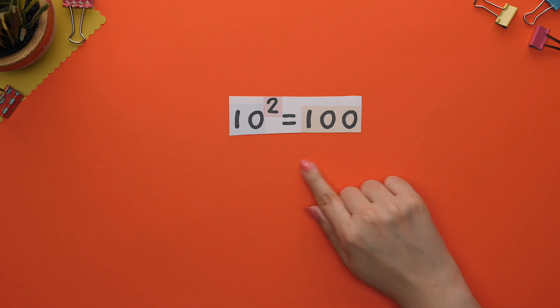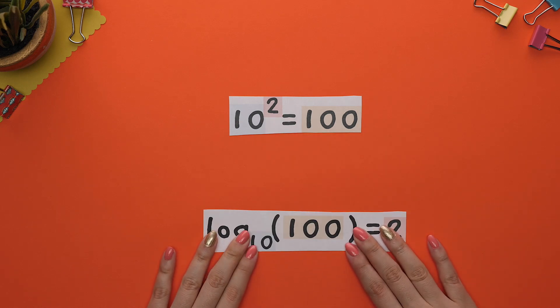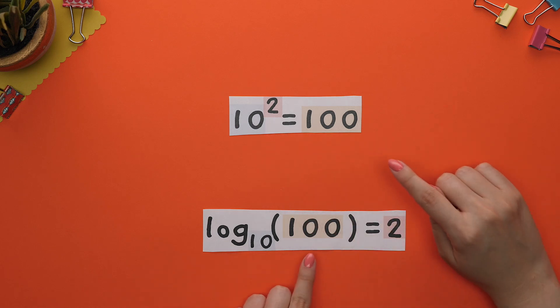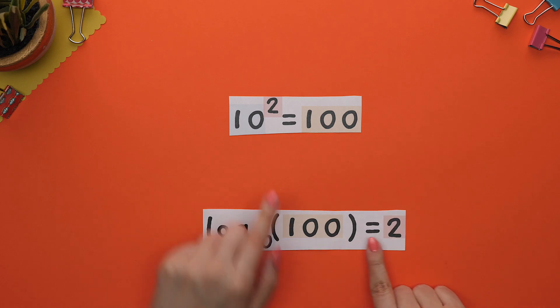Logs are another way to think about exponents. For example, we know that 10 squared is 100. We can rewrite this as a logarithm where the base 10 goes here. The 100, or whatever the left side equals, goes with the log, and our exponent is set equal to all of this.